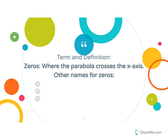Our next term: zeros. This is where the parabola crosses the x-axis. I'm not going to write this down, but I want you to. There are three other names: x-intercepts, roots, and solutions. So there are four names representing the same thing — zeros, roots, x-intercepts, and solutions. They all represent where the graph crosses through the x-axis.